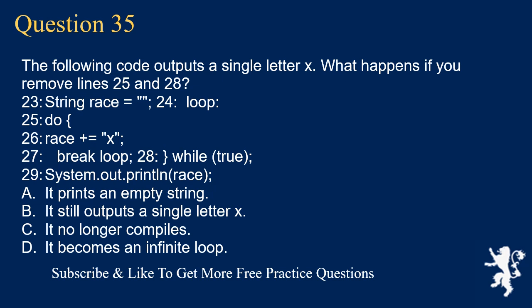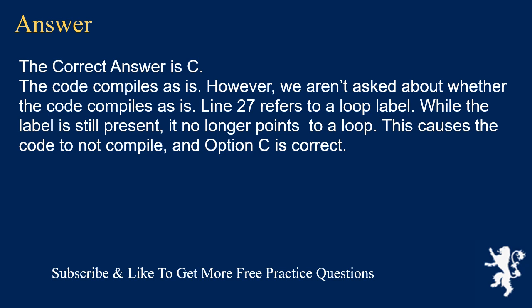Question 35. The following code outputs a single letter X. What happens if you remove lines 25 and 28 (the do and while(true) of a labeled do-while loop)? loop: do { race += "X"; break loop; } while (true); A. It prints an empty string. B. It still outputs a single letter X. C. It no longer compiles. D. It becomes an infinite loop. The correct answer is C. The code compiles as is. However, line 27 refers to a loop label. With lines 25 and 28 removed, the label no longer points to a loop, causing the code to not compile. Option C is correct.